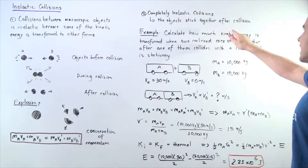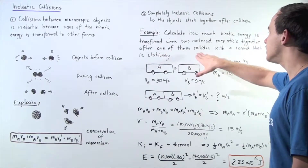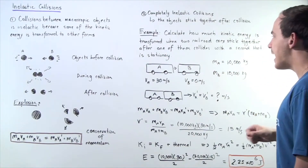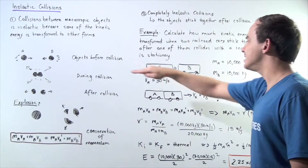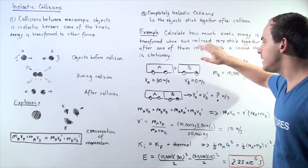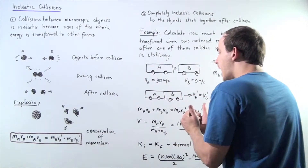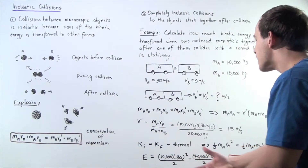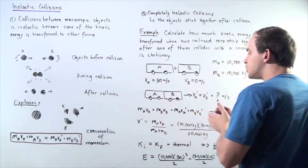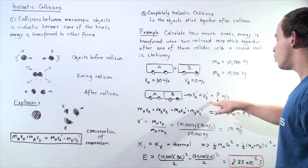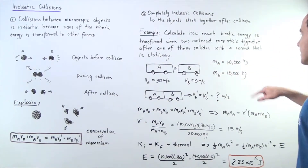Let's calculate how much kinetic energy is transformed into thermal energy when two railroad cars stick together after one of them collides with the second one that is stationary. Car A is traveling at 30 meters per second in the positive direction along the x-axis, and car B is stationary with a velocity of zero meters per second. Let's suppose the mass of A and the mass of B is each 10,000 kilograms.